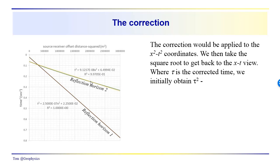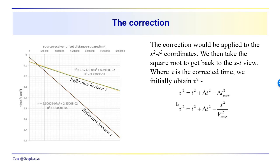Taking a look at the correction: the correction would be applied to the x-squared t-squared responses. The corrected time tau would be a little bit different than t₀ if the correction velocity is not very accurate. We have tau-squared equal to t-squared minus the square of the correction term. The correction term is minus x-squared over V-NMO-squared, and this was x-squared over the actual v-squared.